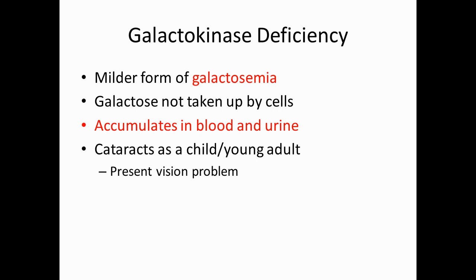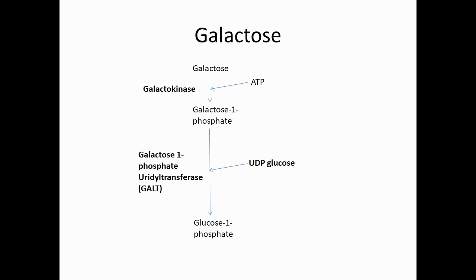The second galactose-related disease is galactokinase deficiency, a milder form of galactosemia. Because galactokinase is deficient, the liver cannot take up galactose into cells, so galactose accumulates in the blood and urine. Patients may develop cataracts as a child or young adult, along with vision problems. The two key enzymes for galactose metabolism are galactokinase and GALT; deficiency of either leads to galactose accumulation.